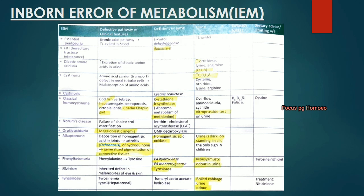Cystinuria: increased urinary amino acids using the mnemonic COLA — cysteine, ornithine, lysine and arginine. Cystinosis: deficient enzyme is cysteine reductase. Classical homocystinuria: deficient enzyme is cystathionine beta-synthase, with abnormal metabolism of methionine. There will be overflow aminoaciduria with cyanide nitroprusside positive urine.